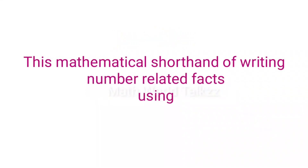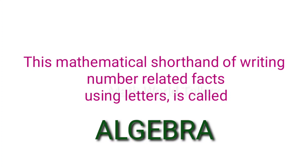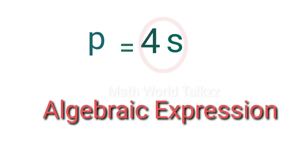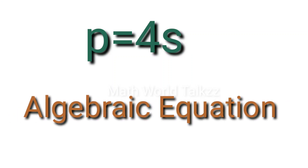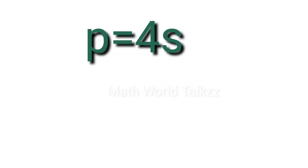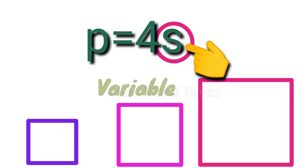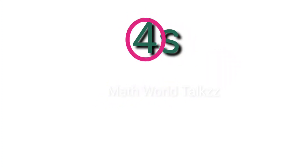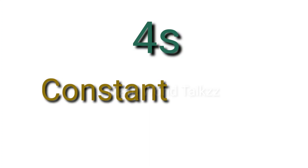This mathematical shorthand of writing number-related facts using letters is called algebra. Here 4s is the algebraic expression of the perimeter, and p equals 4s is known as an algebraic equation. s can take different values if the size of the square changes, so s is the variable in this expression. Since the number 4 does not change in any equation of the perimeter of a square, 4 is the constant. Normally we give small letters for variables.